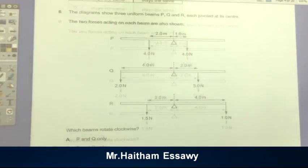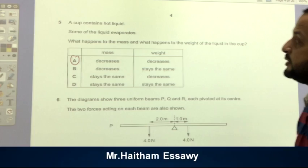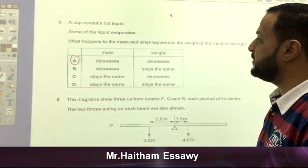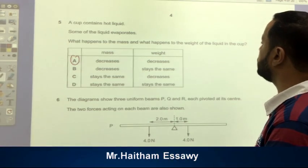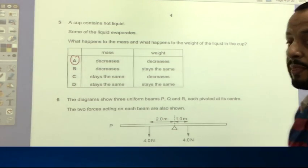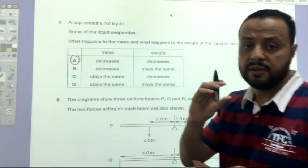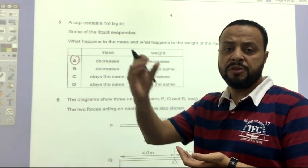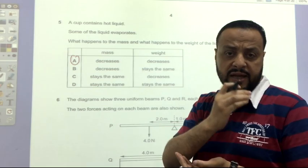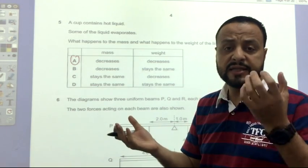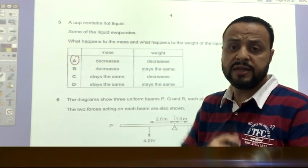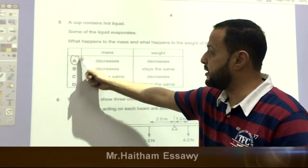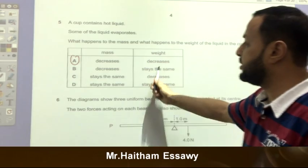After that, a cup contains what liquid? Some of the liquid evaporates. What happens to the mass and what happens to the weight of the liquid in the cup? If you have some liquid in the cup, some of this liquid evaporates. What about the rest of the liquid? Actually, its mass and its weight also decreases because the amount decreases. So we have to choose A: mass decreases and weight decreases.